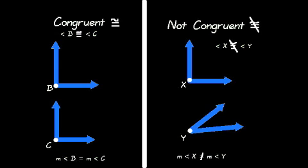On the right you see two angles that are not congruent — angle X and angle Y. Angle X is not congruent to angle Y, and the measure of angle X is not equal to the measure of angle Y.